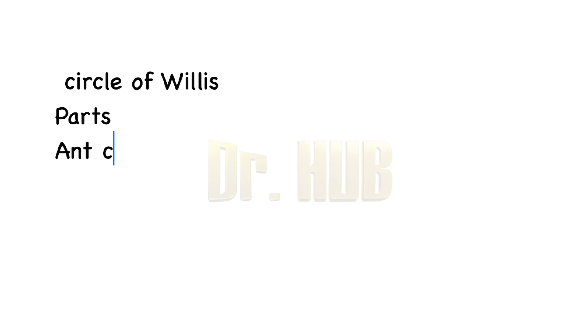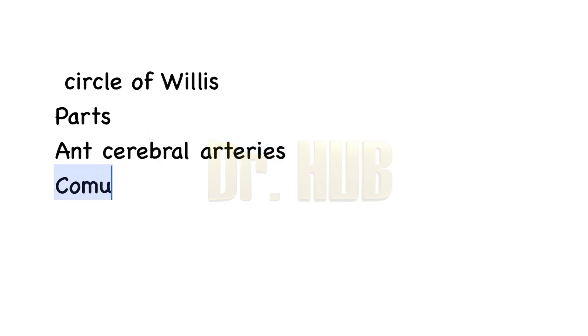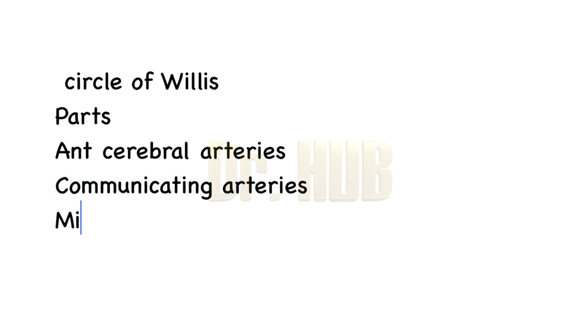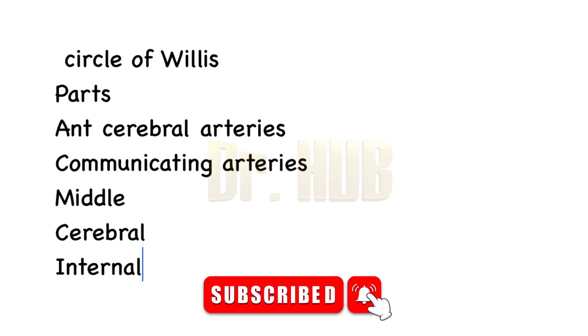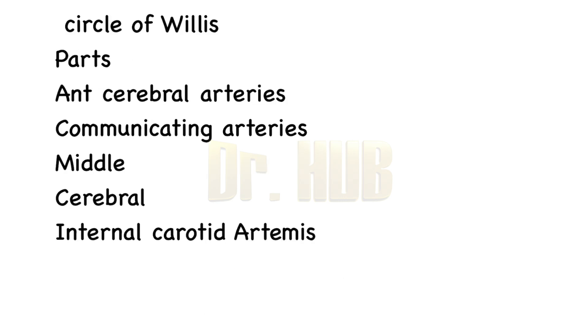So let's look at the parts of the Circle of Willis. The first one is anterior cerebral arteries, then comes anterior communicating arteries, then is the middle cerebral arteries, the anterior choroidal artery, the internal carotid artery, the posterior cerebral arteries.